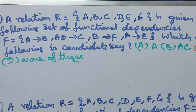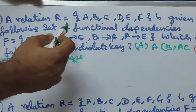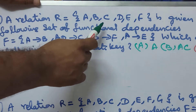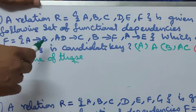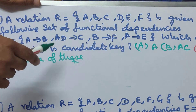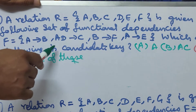Net Paper 2 DBMS June 2006, Question Number 1. A relation R equal to A, B, C, D, E, F is given with the following set of functional dependencies: A implies B, AD implies C, B implies F, A implies E. Following candidate key is to be determined.